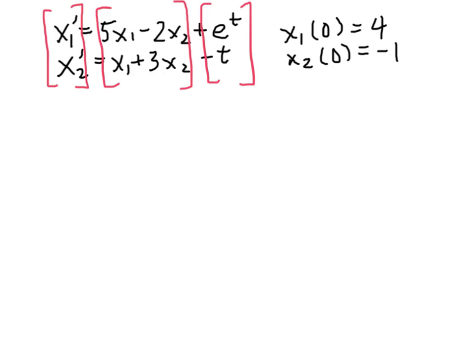And then we'll make this into another vector here. So once we do that, we can see what we have is this first vector is simply x prime. This part, the second part, was the matrix A, which is [5 -2; 1 3], times the vector x, whose components were x1 and x2.